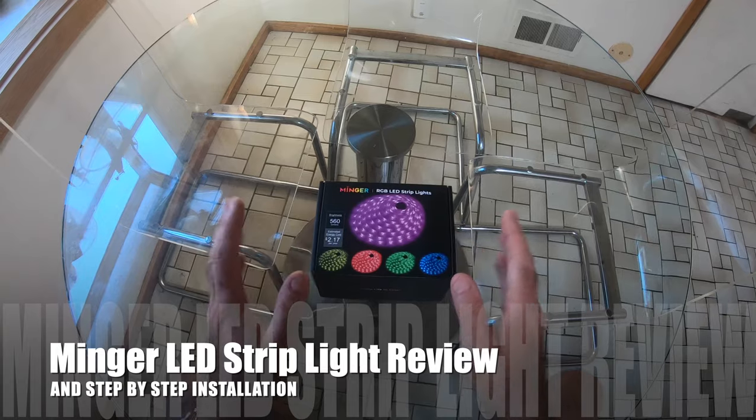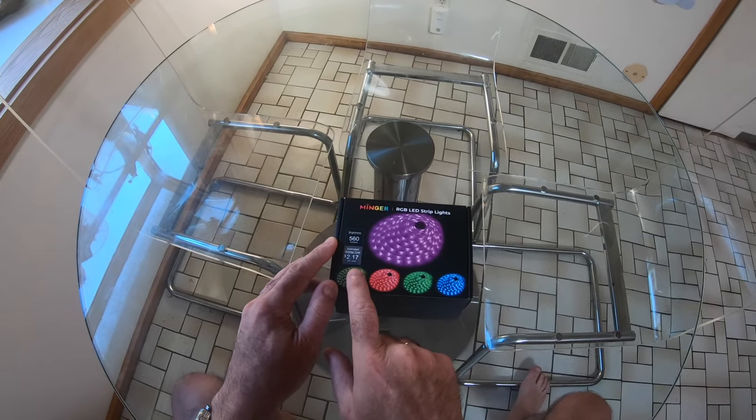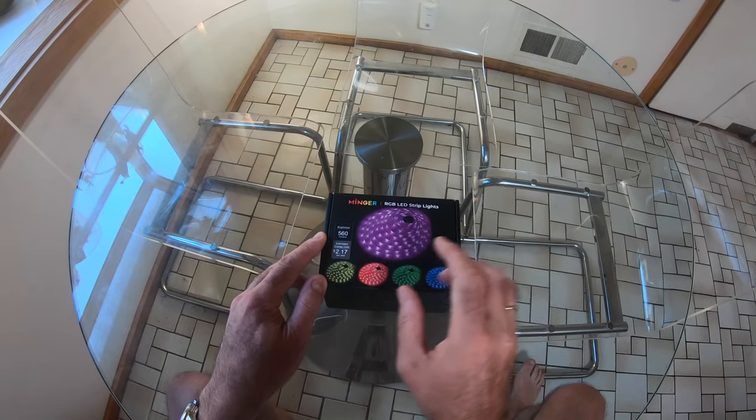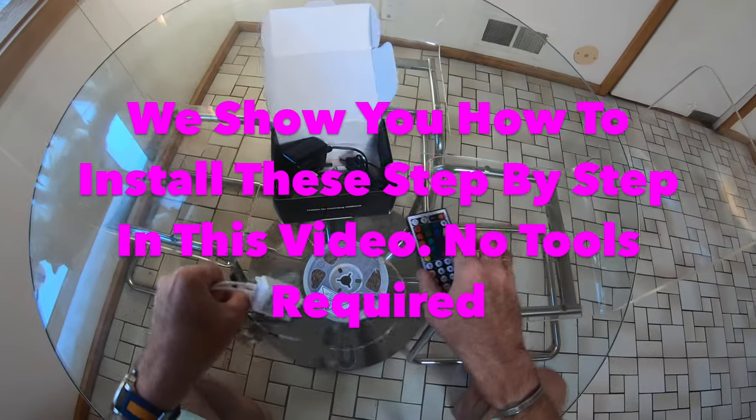This is Real Life and welcome back to the channel. Today we're reviewing the Minja RGB LED strip lights with an estimated running cost of just $2.17 per year.